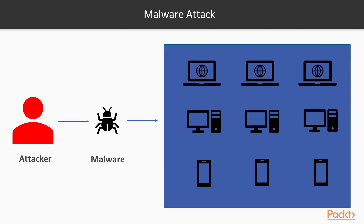This is a basic kind of attack on systems. On the right-hand side you can see a network, and all these machines are endpoints — basically these can be client machines. They can be tablets, smartphones. These are all called endpoints inside your network.